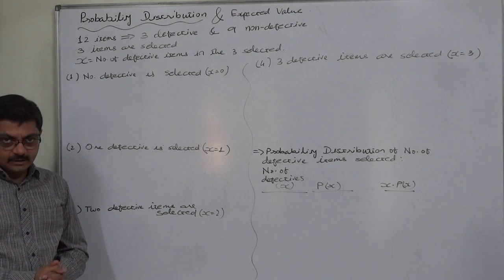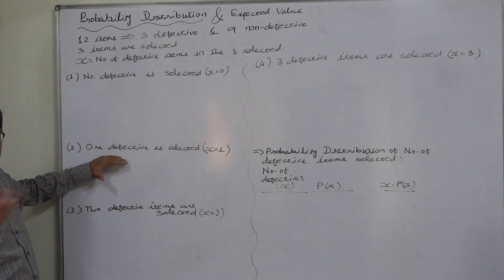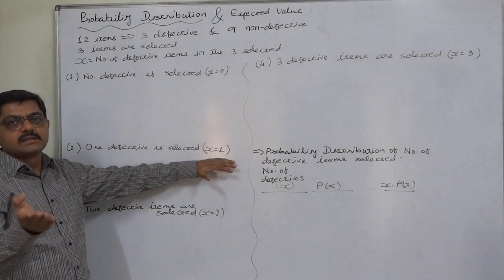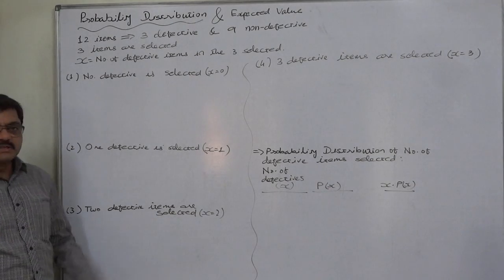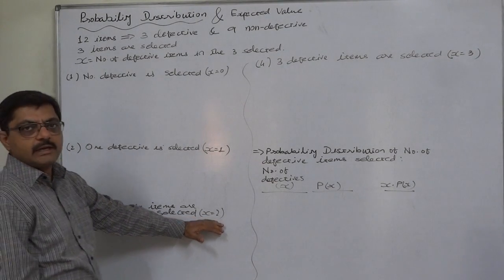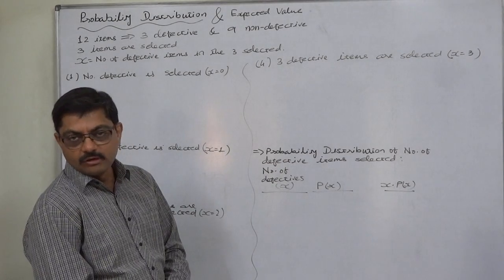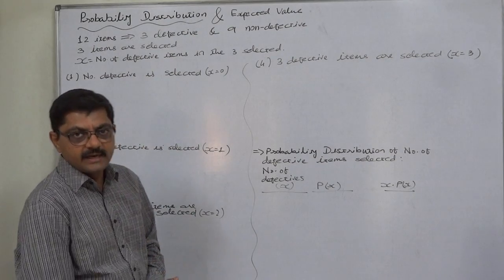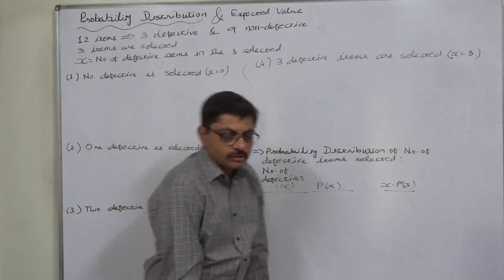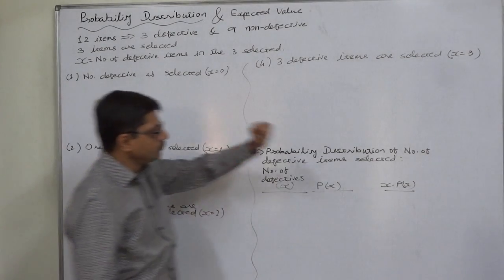First of all, no defective is selected, so random variable x takes value 0. Then one defective item is selected — that means one defective and two non-defective items are selected — so x takes value 1. Two defective items are selected, meaning two defective and one non-defective, so x takes value 2. And the last possible outcome is all three defective items are selected, so x takes value 3. That means x can take four possible values: 0, 1, 2, and 3.